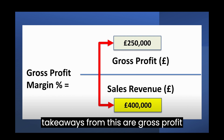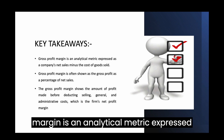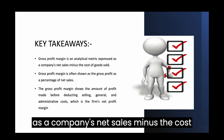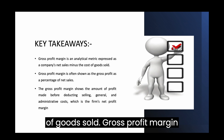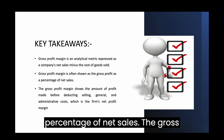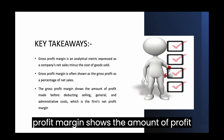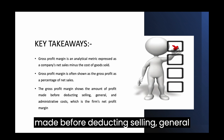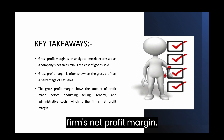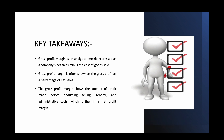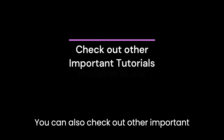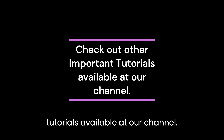The key takeaways are: gross profit margin is an analytical metric expressed as a company's net sales minus the cost of goods sold. It is often shown as a percentage of net sales, and it shows the amount of profit made before deducting selling, general, and administrative costs — which represents the firm's net profit margin. Thank you for listening. You can also check out other important tutorials available on our channel.